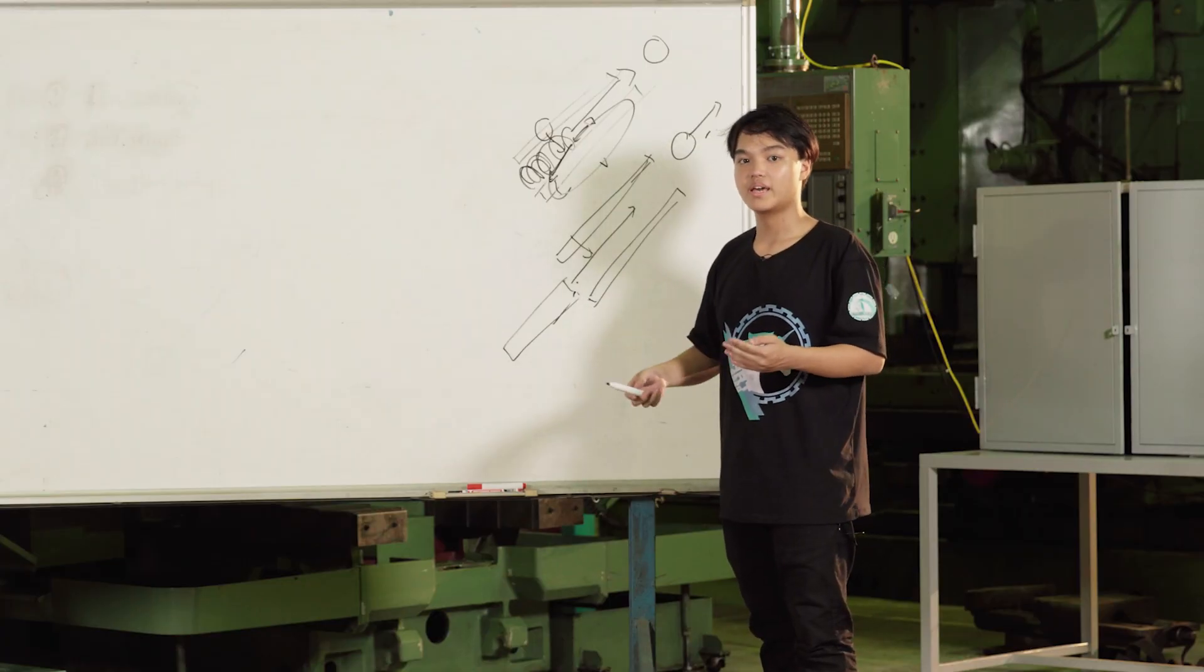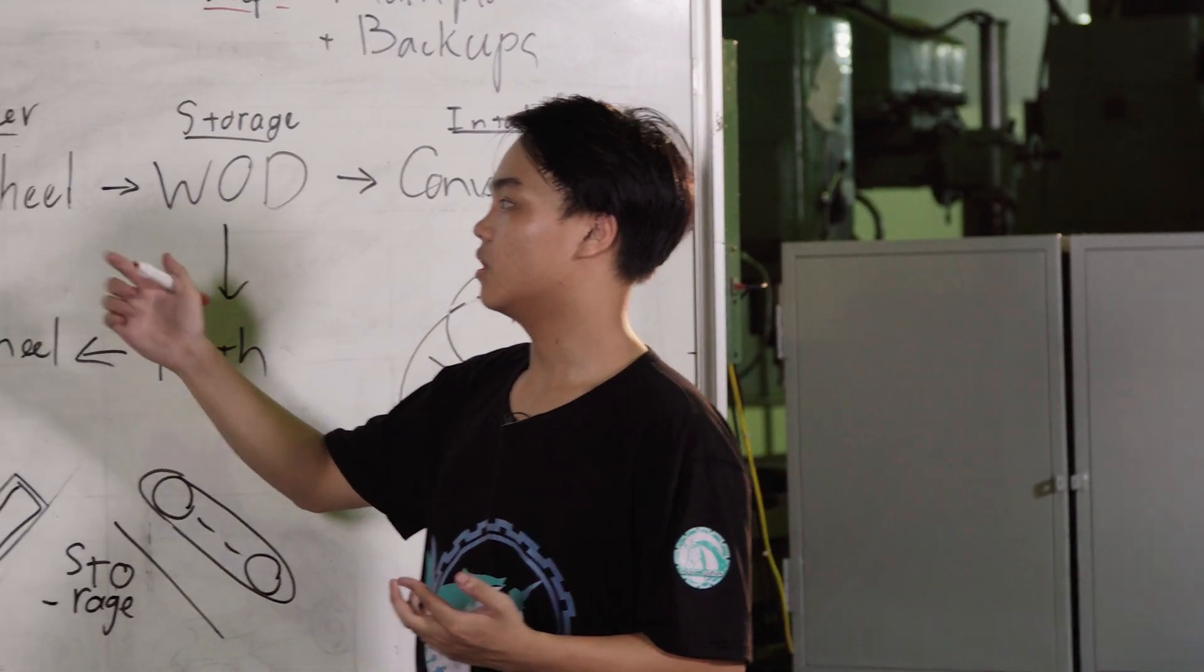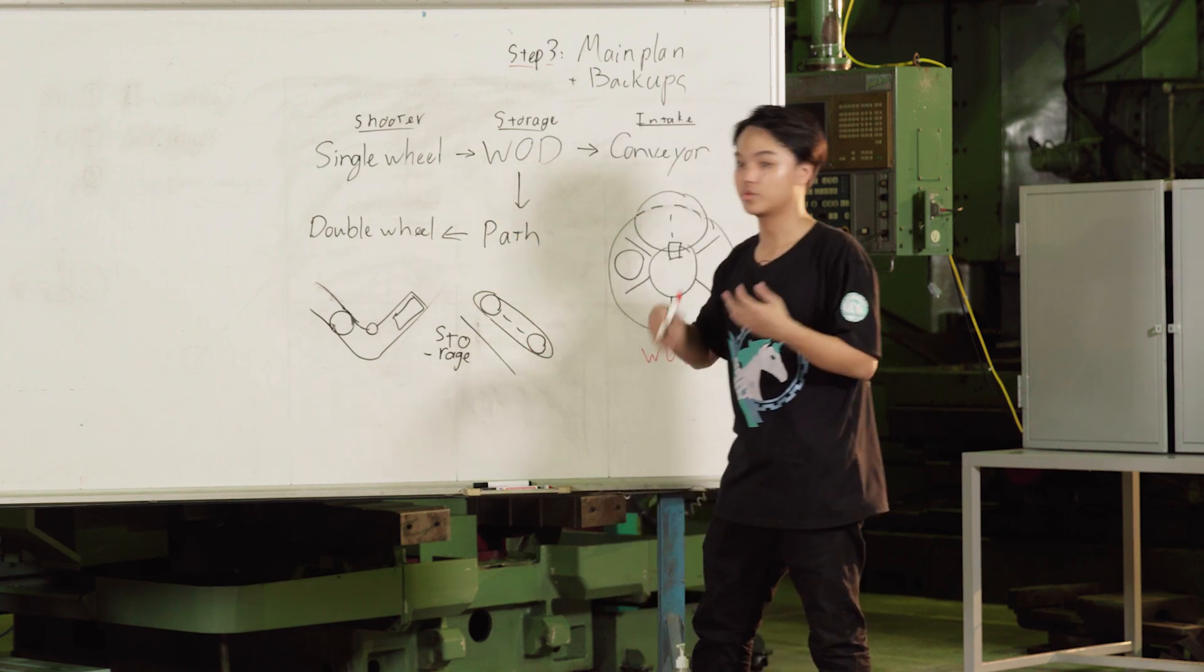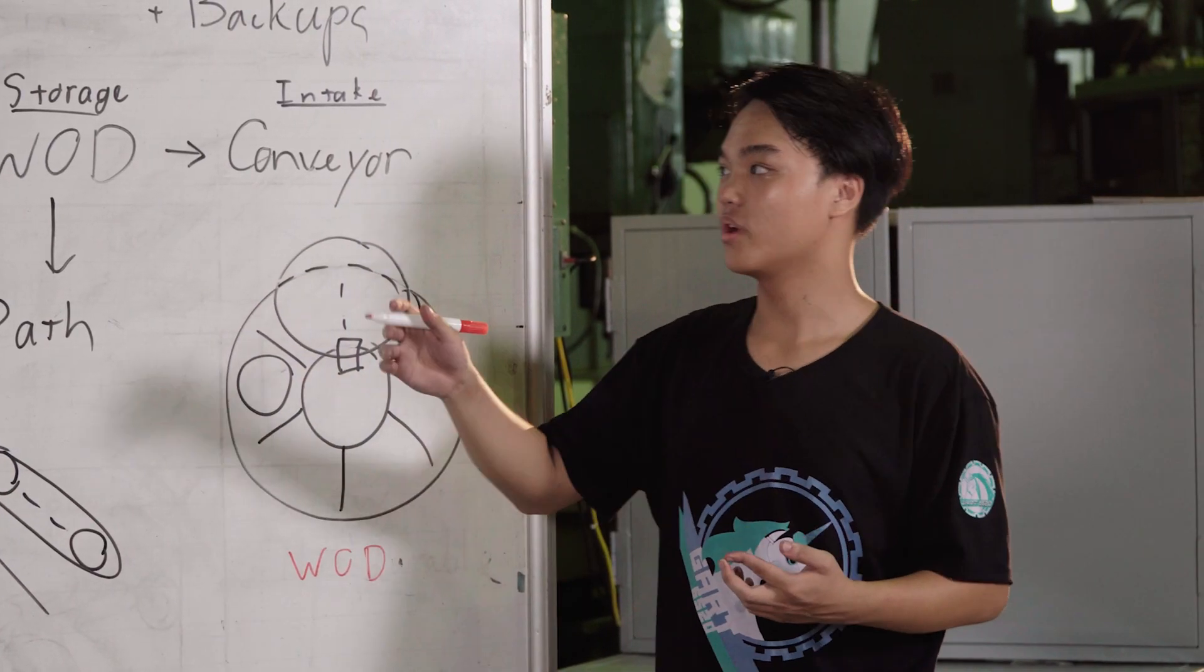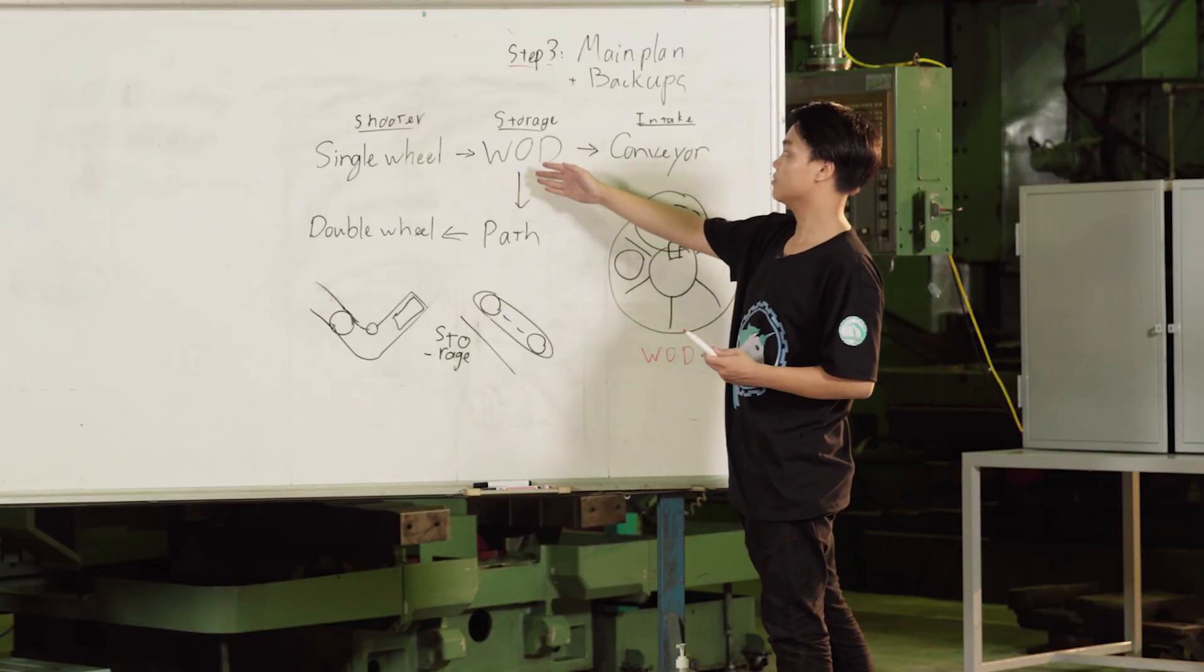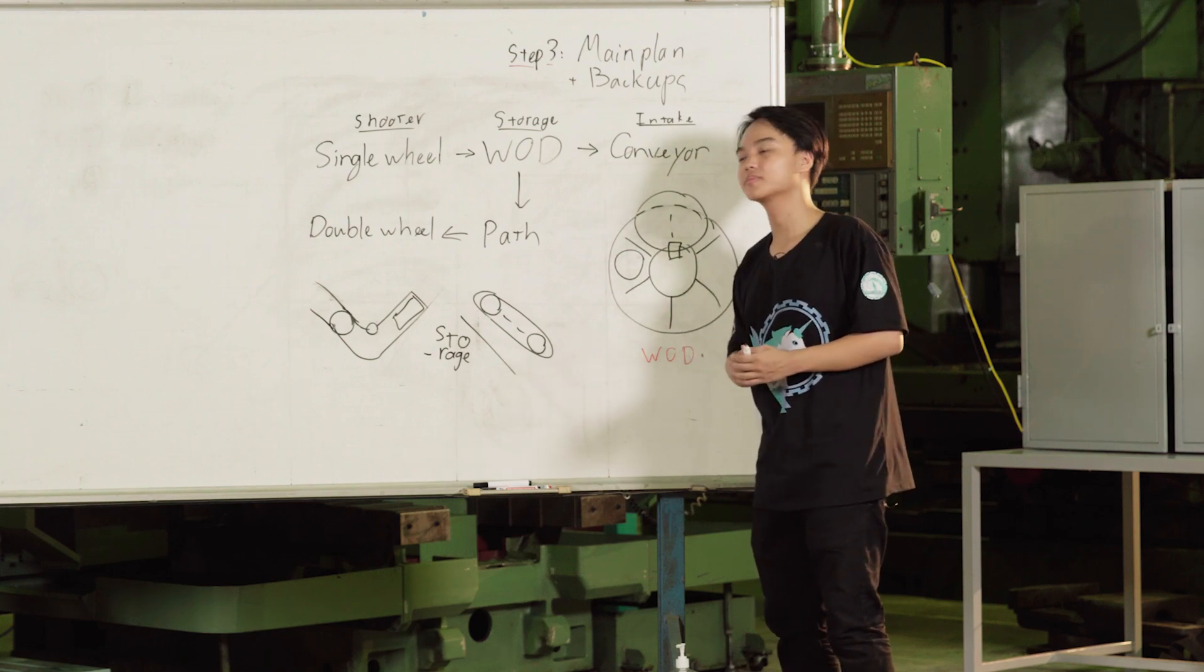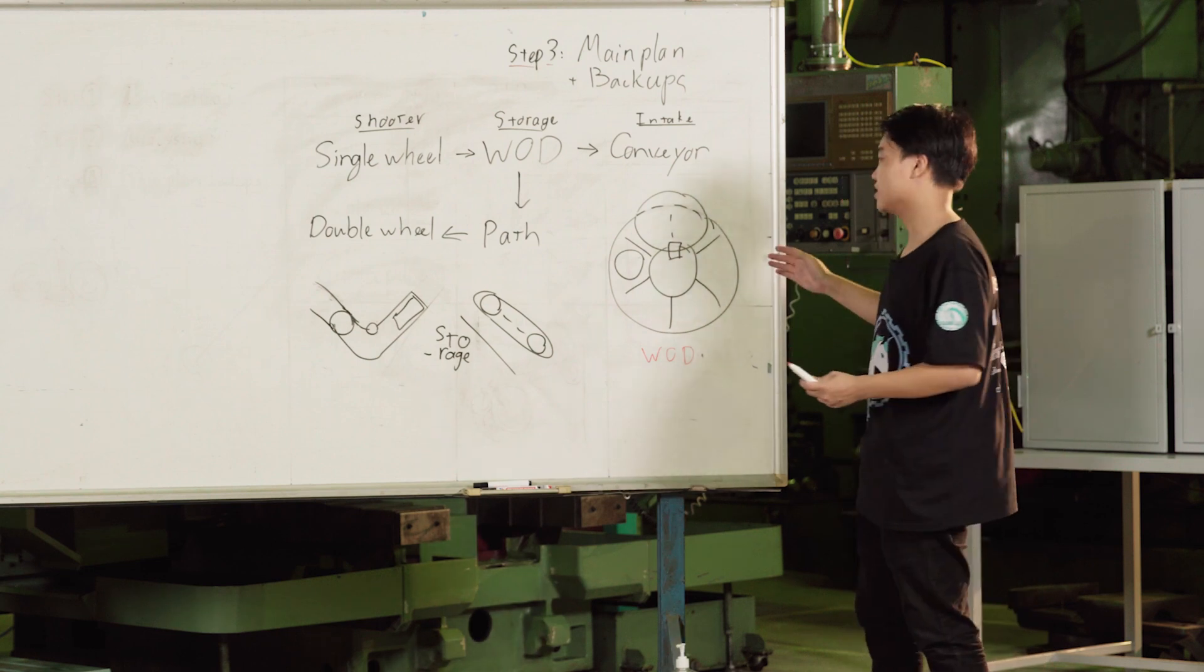Now I will move on to the next step and analyze everyone's ideas. Let's say we have decided to use the single wheel shooter because we see the pros and cons, and an intake that will work well with this shooter. We have prepared for you two mechanisms for the storage and intake that work well with the single wheel. We have decided to use the wheel of doom.